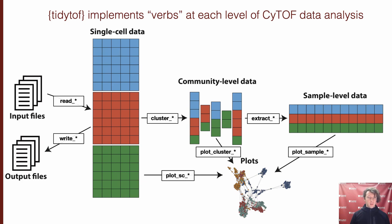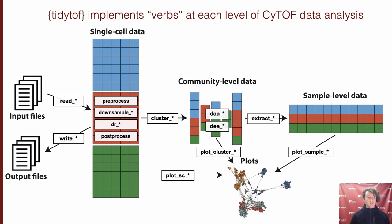At the single cell level, you have the preprocess, downsample, dimensionality reduce, and post-process verbs. At the community level, you have the differential abundance analysis and differential expression analysis verbs, both of which implement statistical tests for comparing communities or clusters with one another. And then at the sample level, you primarily have verbs associated with predictive modeling, like the train, predict, and assess verbs.